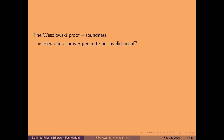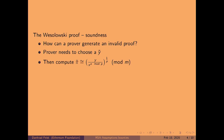For the soundness, we need to ask: how could a prover generate an invalid proof? Let's say the prover chooses some ỹ that's not necessarily the right answer to our exponentiation problem. In order to generate a proof for this, they need to take the p-th root of ỹ divided by x to the power of e mod p, which you can rewrite as (ỹ divided by x to the power of e) to the power of 1 over p times something.